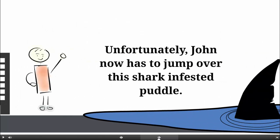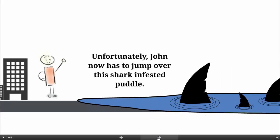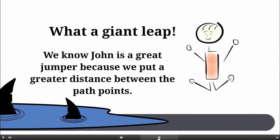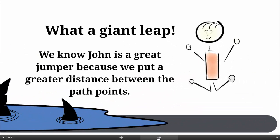Now, John has a problem. There are sharks in that puddle. Fortunately, John is quite the jumper. We know how far he can jump from the distance between the path points.